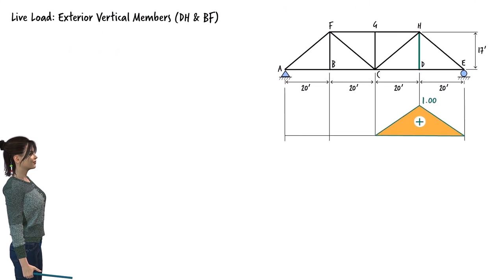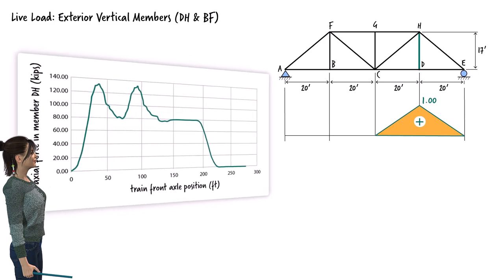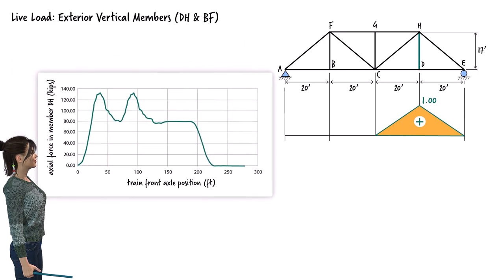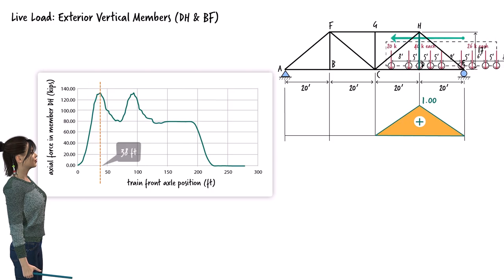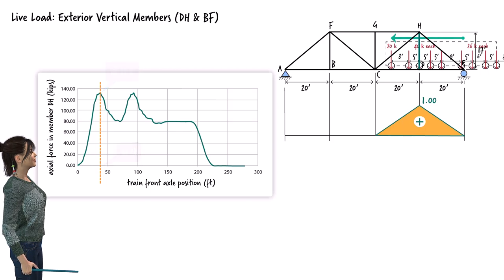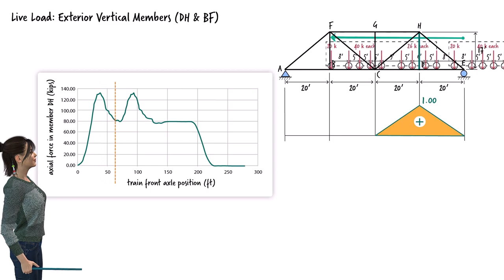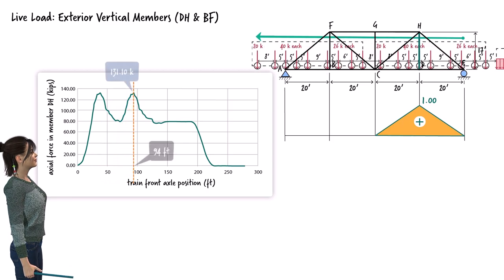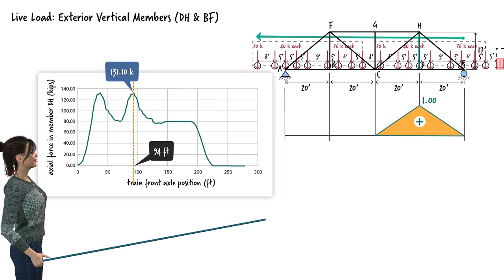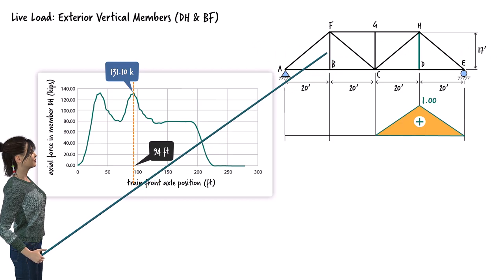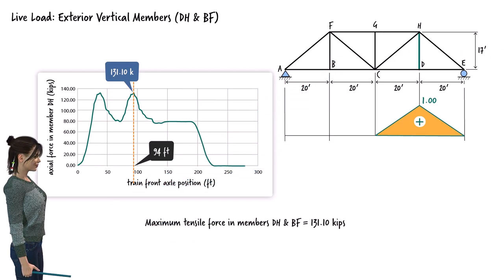To determine the maximum tensile force in the two exterior vertical members, let's analyze member DH. The peak tensile force develops when the front axle of the train is 38 feet to the left of point E, with a magnitude of 131.1 kips. The same maximum force develops in the member when the front axle moves 94 feet to the left of point E. So under the live load, members DH and BF are always in tension, and the maximum tension force in both members equals 131.1 kips.